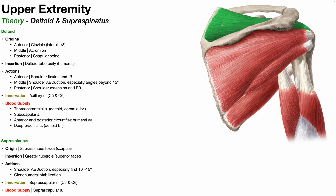The supraspinatus is also a convergent muscle, like many other rotator cuff muscles, and it inserts on the greater tubercle — specifically the superior facet of the greater tubercle. The subscapularis is the only rotator cuff muscle that does not insert on the greater tubercle; it inserts on the lesser tubercle of the humerus. All three visible rotator cuff muscles — supraspinatus, infraspinatus, and teres minor — insert on different facets of the greater tubercle: supraspinatus on the superior facet, infraspinatus on the middle facet, and teres minor on the inferior facet.